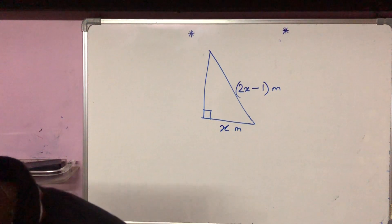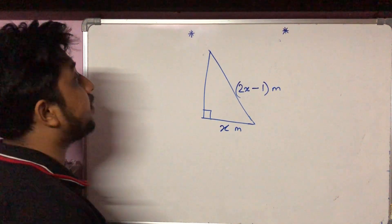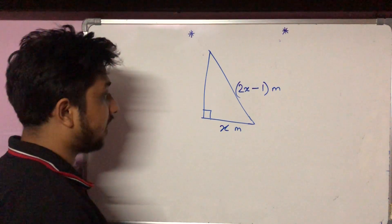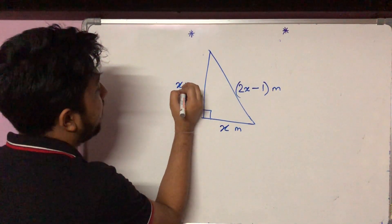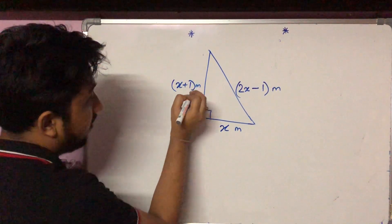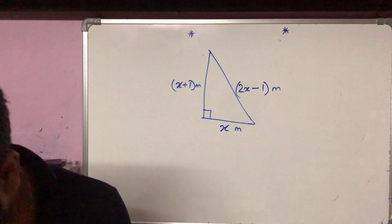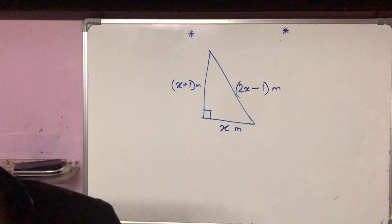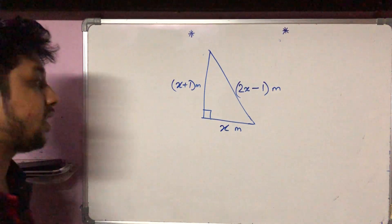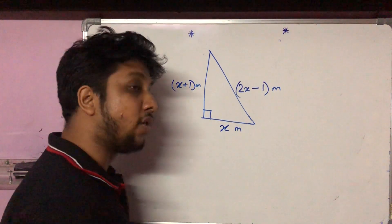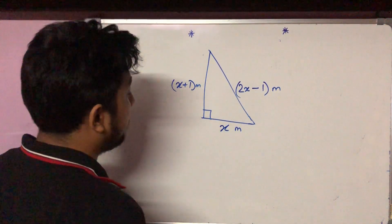If the third side is one more than the shortest side, then the remaining side — the perpendicular — is x plus 1. Now we need to apply the Pythagoras theorem formula.